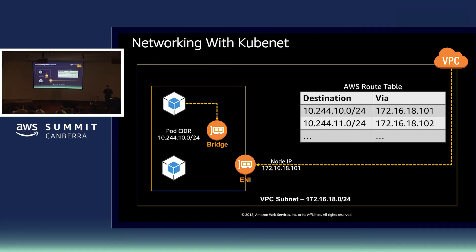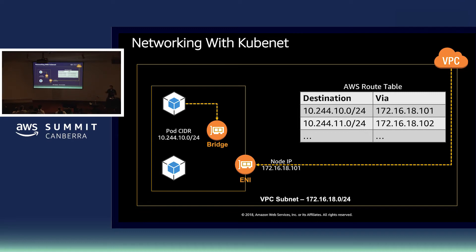One of the basic mechanisms for orchestrating network connectivity within Kubernetes is kubenet — this is the default mechanism enabled if you deploy a cluster using KOPS. Kubenet is fairly simple; it doesn't provide any advanced capabilities. What it does is make sure every pod has an IP address and then populate the VPC route tables so all other nodes know where to find pods across the cluster. The drawback is that the VPC route table has a limit of 50 routes per table, meaning you can only deploy a cluster of up to about 50 nodes.